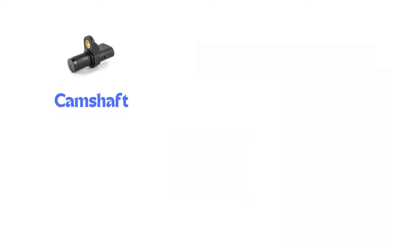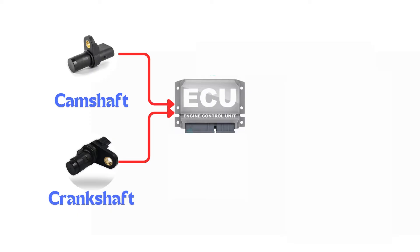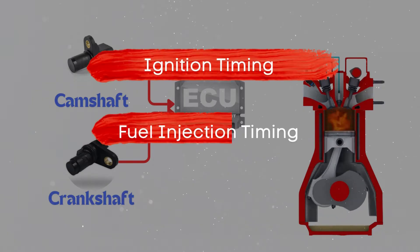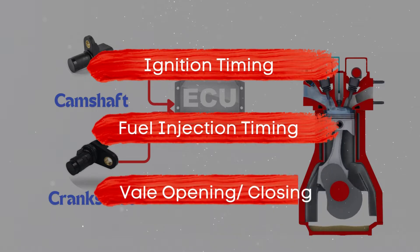The camshaft position sensor measures the position of the camshaft, while the crankshaft position sensor measures the position of the crankshaft. Both of these sensors send crucial data to the ECM, which uses this information to control ignition timing, fuel injection timing, and valve timing.